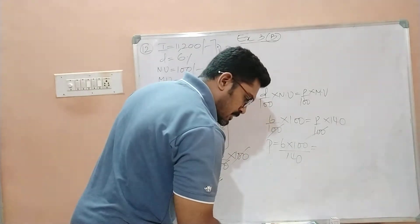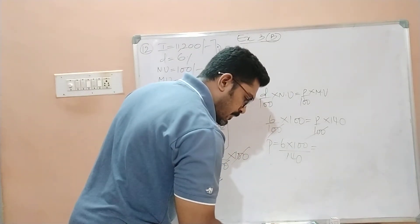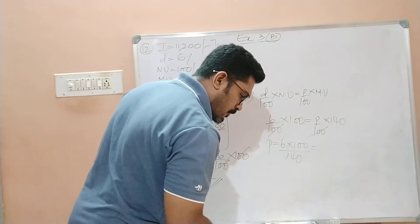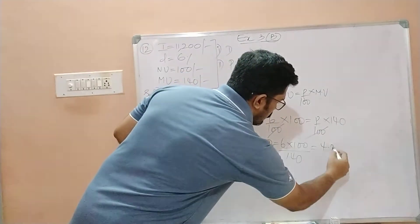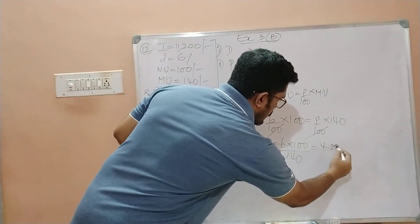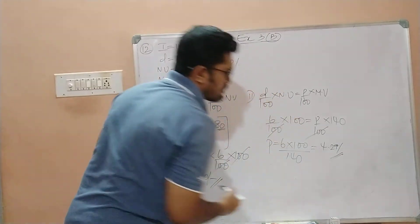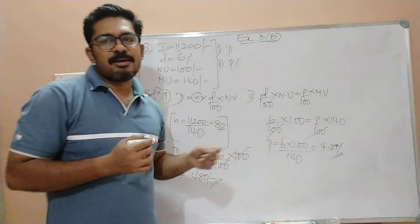Let us solve this. 600 divided by 140, which is equal to 4.29 percent. This is your profit percentage.